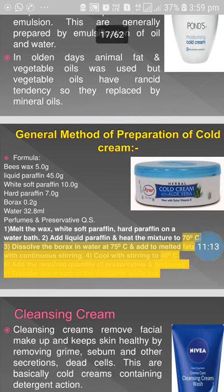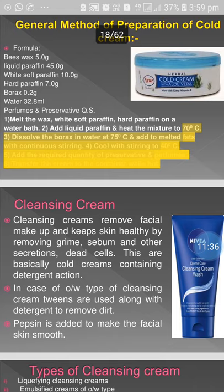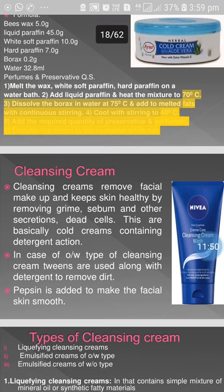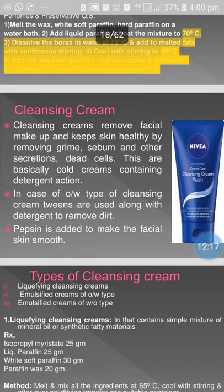General method of preparation of cold cream — formula: beeswax 5g, liquid paraffin 45g, white soft paraffin 10g, hard paraffin 7g, borax 0.2g, water 32.8ml, perfume and preservative quantity sufficient. Melt beeswax, then add white soft paraffin and hard paraffin on a water bath. Add liquid paraffin and heat to 70°C. Dissolve borax in water at 75°C and add it to the melted fats with continuous stirring. Cool with stirring to 40°C, add preservatives and perfume, allow to cool, transfer into container, label and submit.